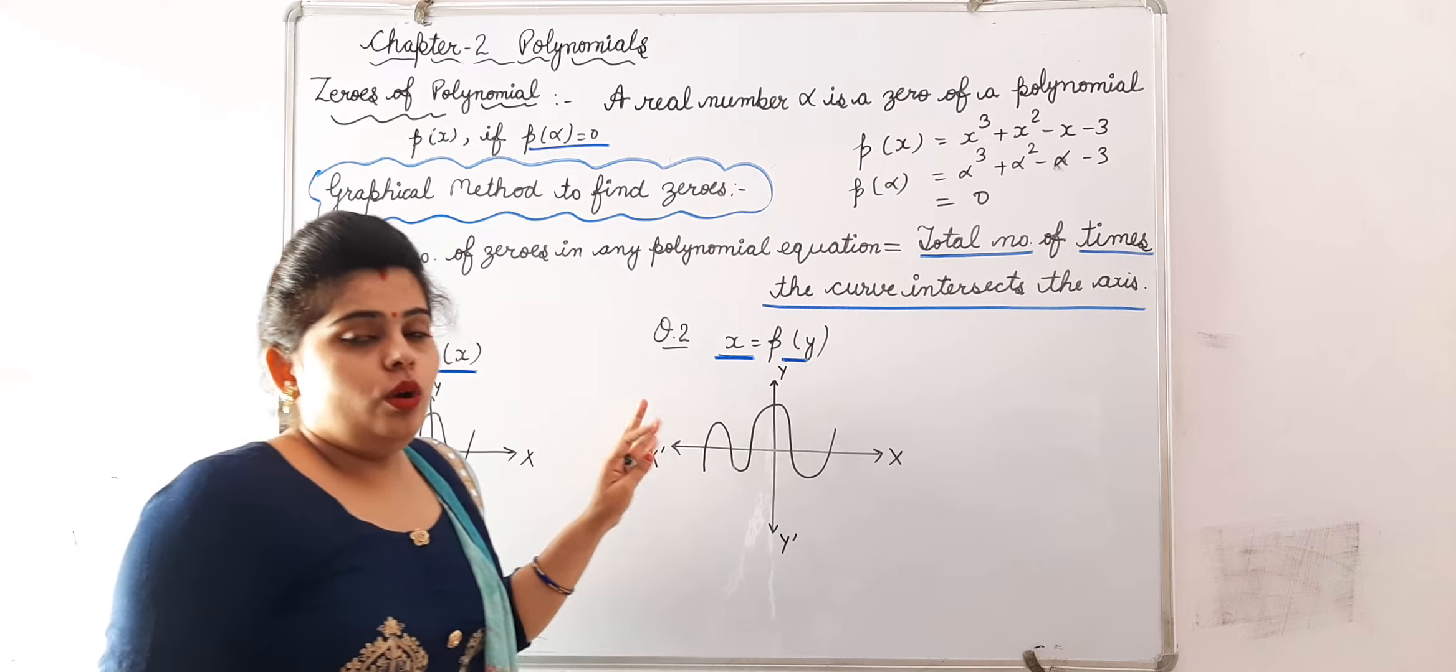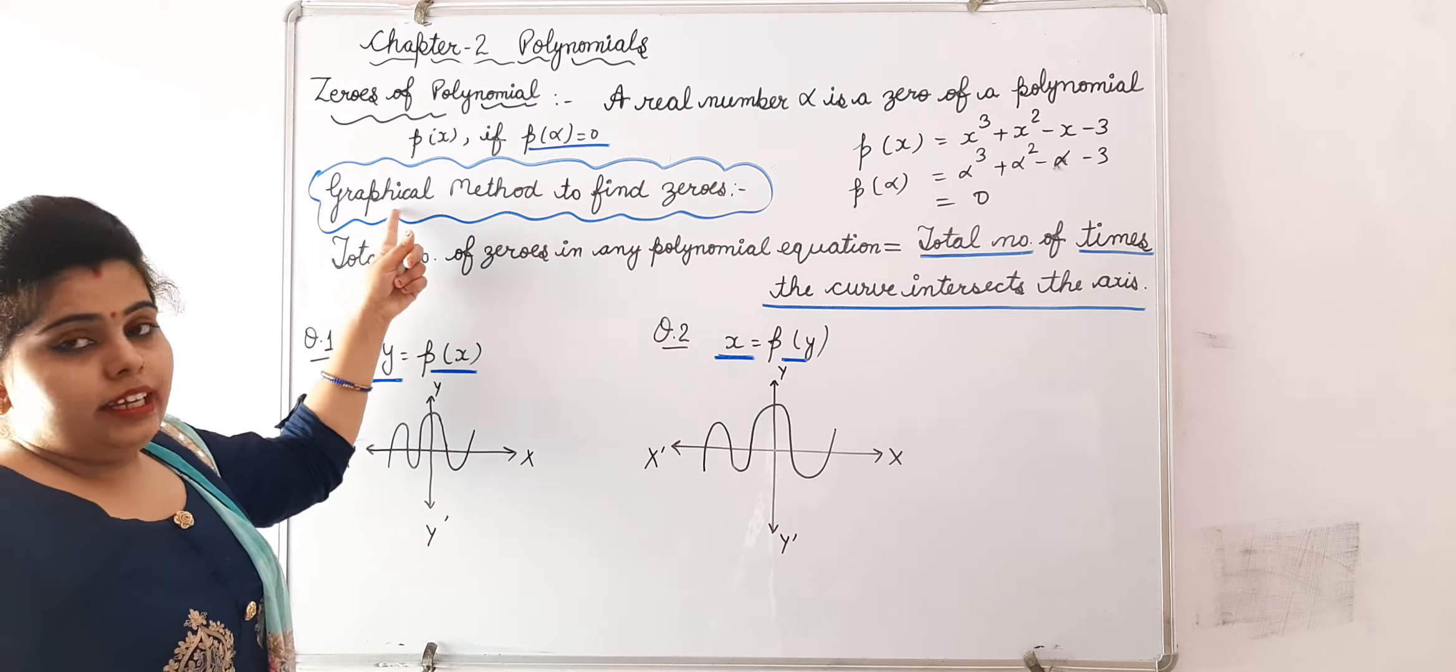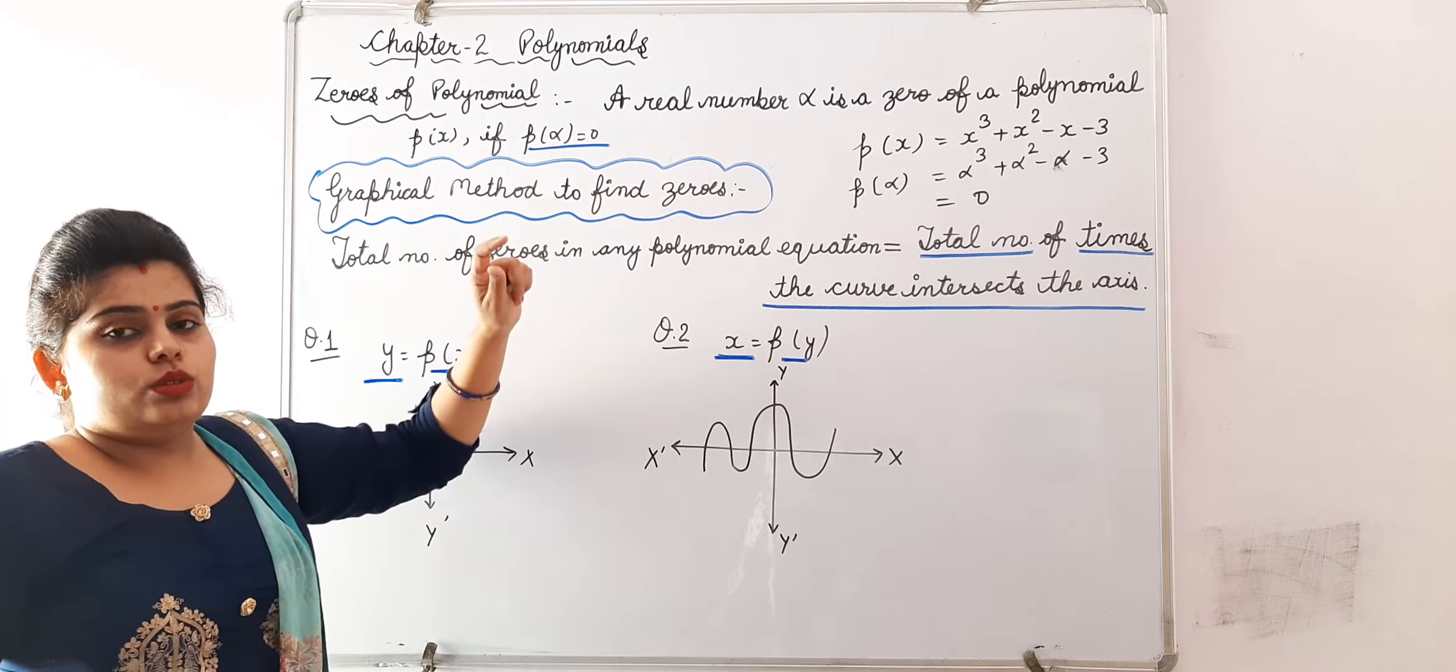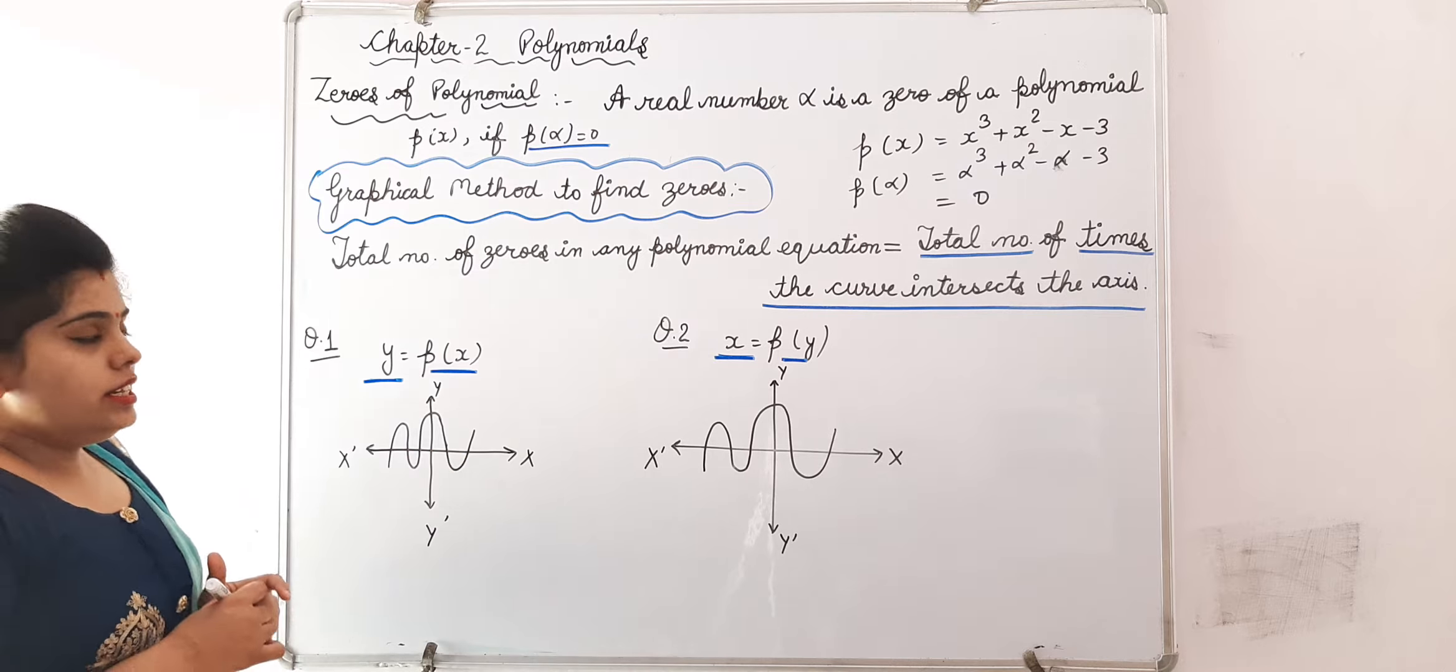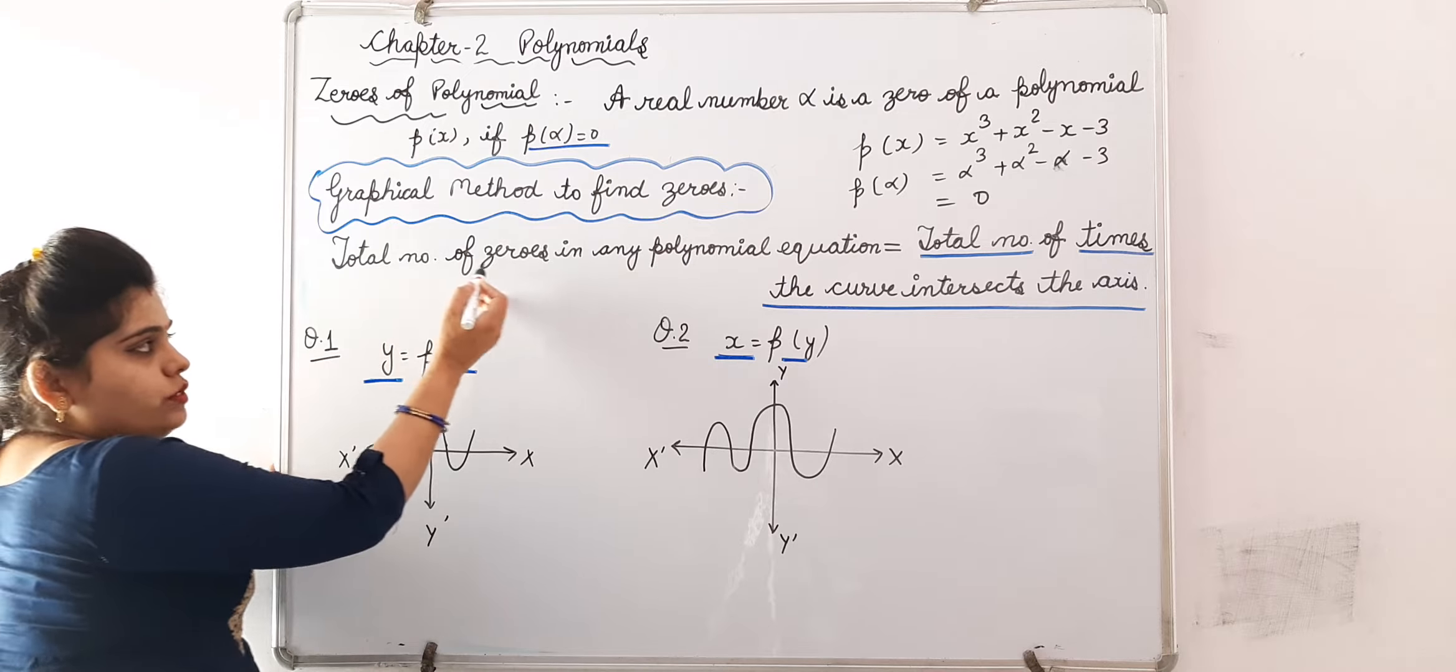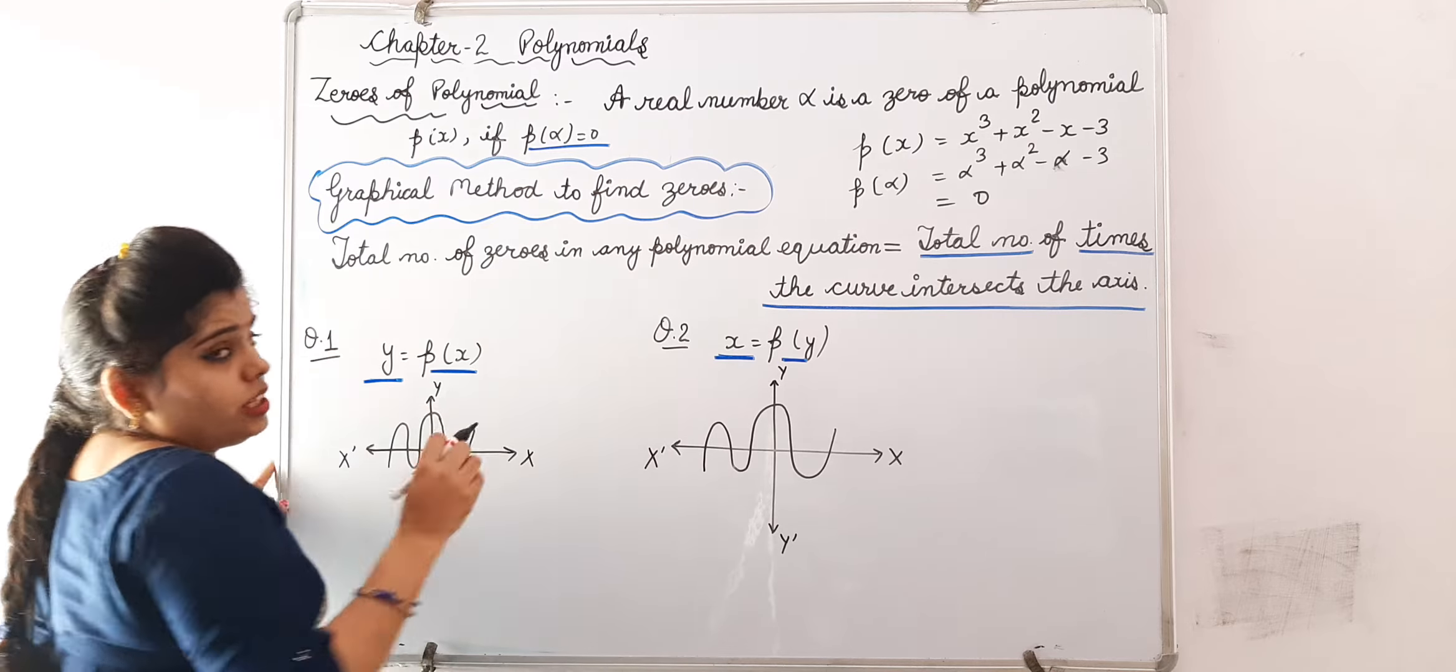Now we will study graphical method to find zeros. This we will study in exercise 2.1. Now what is its formula? Total number of zeros in any polynomial equation - suppose we have any equation given.